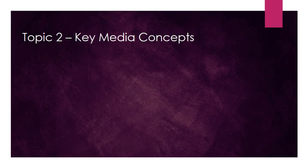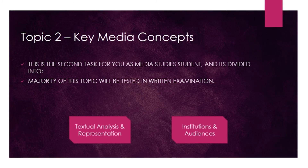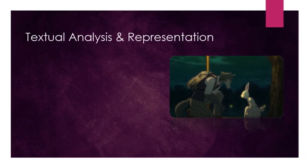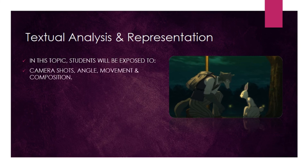When it comes to topic two, we will focus on the key media concepts, reflected in two major categories. The first part will talk about major keys one and two — textual analysis, how to analyze the media language, and the representation concept. Students will be exposed to all the different techniques regarding cinematography, camera shots, and angles. After that, we will jump into the editing concepts — how to take these different shots and combine them in a certain way to form the last piece of art that we are trying to make.